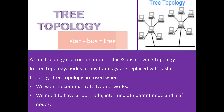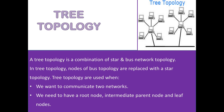Next we have Tree Topology. A tree topology is a combination of star topology and bus topology, where the nodes of bus topology are replaced with a star topology. Tree topology is used when we want to communicate between two networks and when we want a root node, an intermediate parent node, and a leaf node in our network. The root has the highest priority, lower than that is the parent, and the least priority goes to the leaf node. Such structures are often used in central database systems.